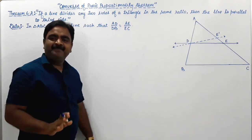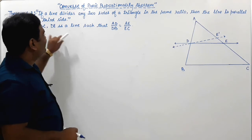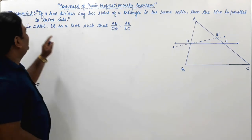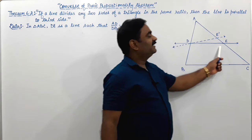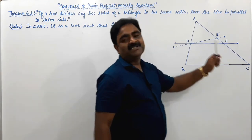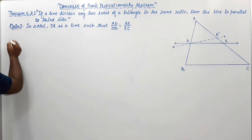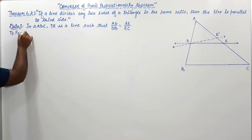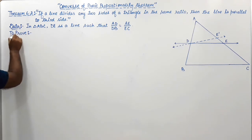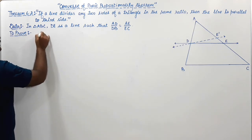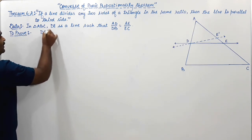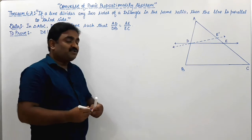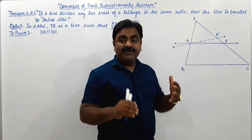This thing is given. Now if this is given, then what are we going to prove? Then the line DE is parallel to the third side, meaning DE is parallel to BC. This we have to prove. So we need to write 'To Prove': DE is parallel to BC.